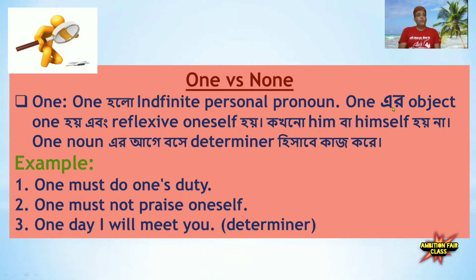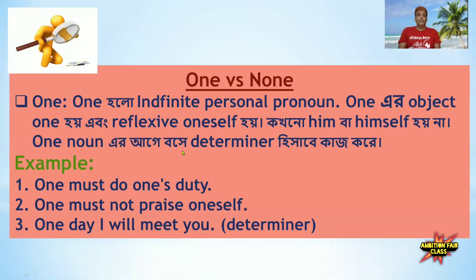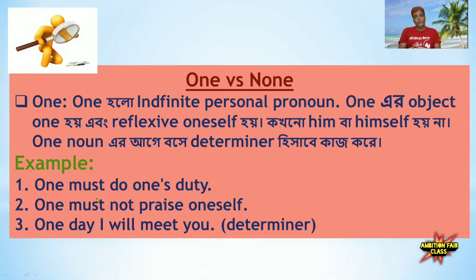One is used as an indefinite personal pronoun. When one is the object in a structure, its reflexive pronoun form is oneself, and its possessive form is one's. For example: One must do one's duty.